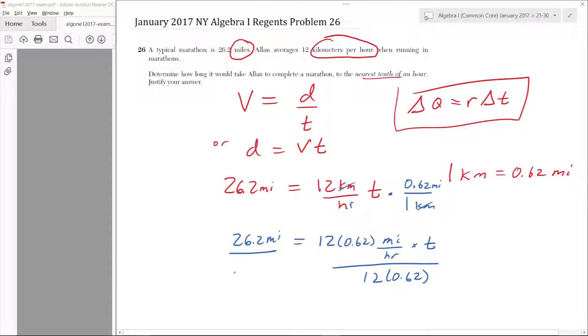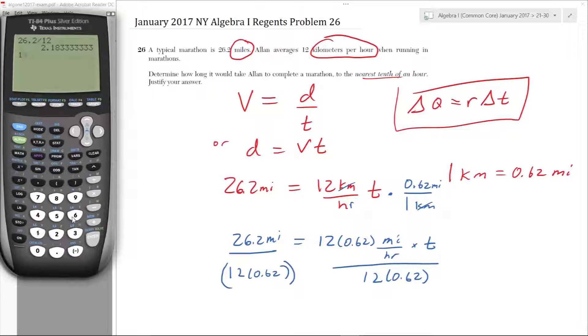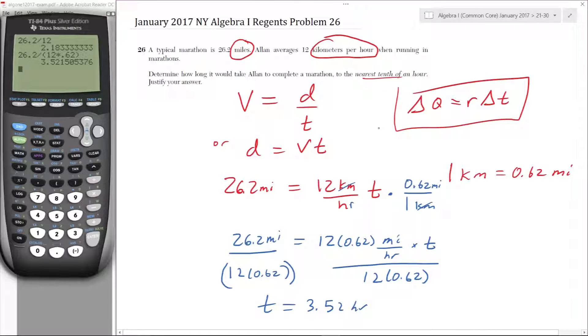And now we just divide by 12 times 0.62. And we're going to carefully use our parentheses. Divide by 12 times 0.62. And we know that the horizontal fraction bar is a grouping symbol, but the diagonal one is not. So this is 26.2 divided by 12 times 0.62. And this should be the answer. So 3.52. So T equals 3.52 hours. And we need to round to the nearest tenth. So this rounds down. So T is approximately 3.5 hours.